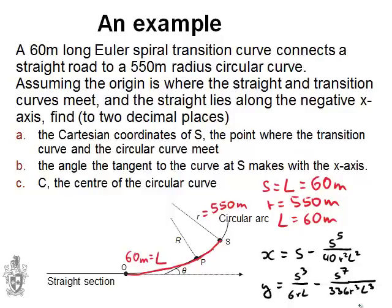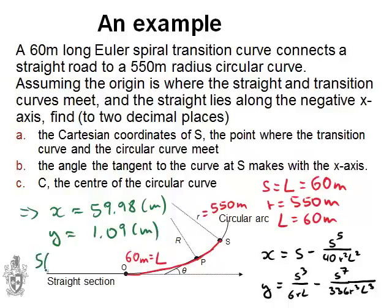I've put in these values for S, R and L into those two equations. And my answers are X is approximately 59.98 and that would be in meters. And Y is approximately 1.09 and that would also be in meters. This means that point S has the coordinates 59.98 and 1.09. This is the answer to part A of this question.